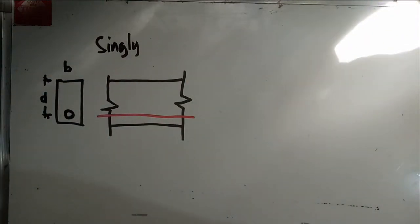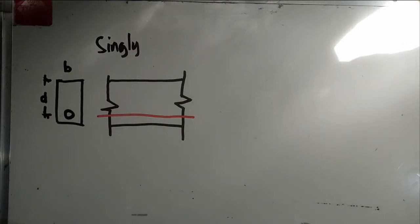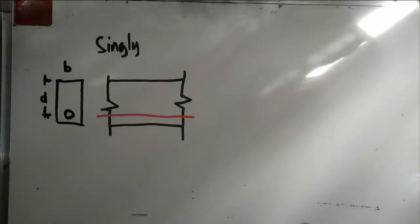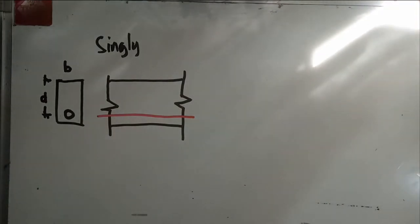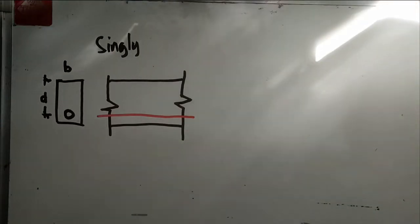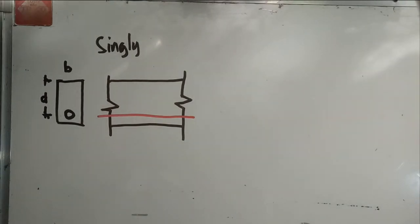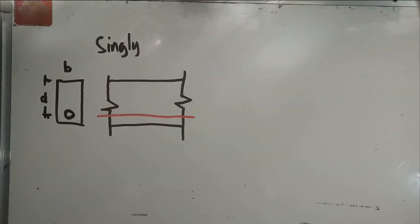In actual design scenarios, architects and engineers agree on constraints. For example, in a commercial building, they may specify that the floor-to-floor height should be 3.5 meters. Given this constraint, the elevation from ground floor to second floor is fixed at 3.5 meters.